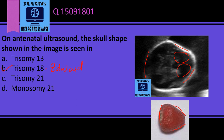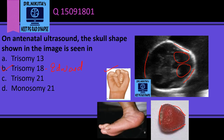Other important features of Edwards syndrome to remember are overlapping of the digits and rocker bottom feet. If this is a child with Edwards, there will be low set ears and micrognathia. In the gastrointestinal system there will be omphalocele, which is important to remember, and in the kidneys there would be cystic dysplasia. In the hands there are overlapping digits and in the feet there will be rocker bottom feet.